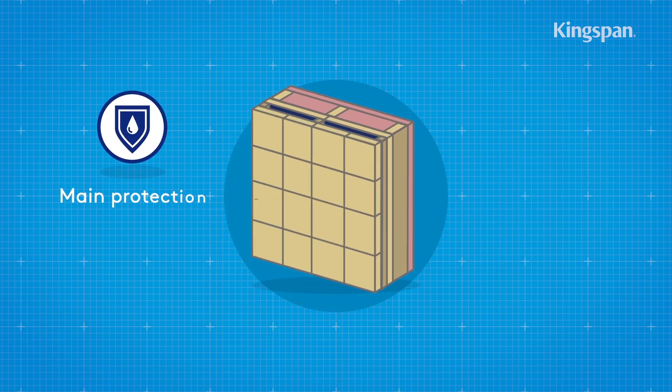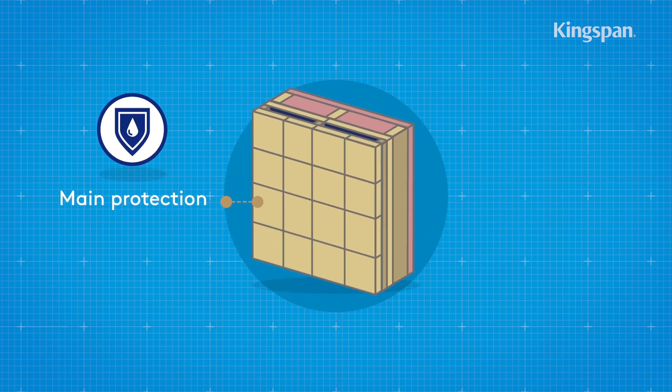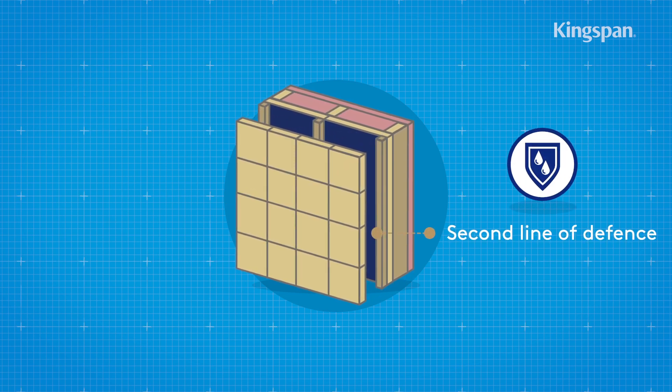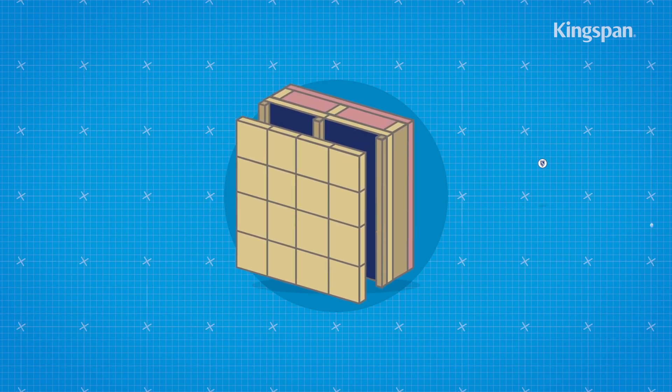The cladding provides the main protection from rainwater penetration, so breather membranes ensure a second line of defense against water penetration.